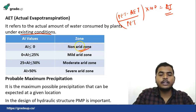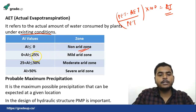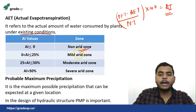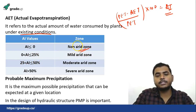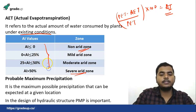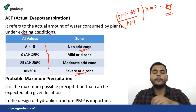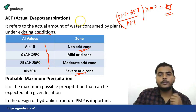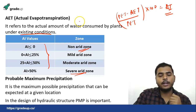If the Aridity index is between 0 to 25 it is a mild arid zone; from 25 to 50 it is a moderate arid zone; and above 50 percent it is a severe arid zone. So just remember this data, and accordingly if a question asks which zone, you can give the correct answer.